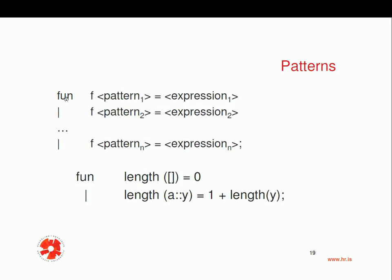In general, when using patterns we write: fun f pattern1 equals expression1, or pipe f pattern2 equals expression2, up to pattern n equals expression n. In our length implementation, we have fun length with the empty pattern returning zero, and the second case a double colon y where a is the head and y is the tail, returning one plus length of y. Two patterns, two expressions, two cases.